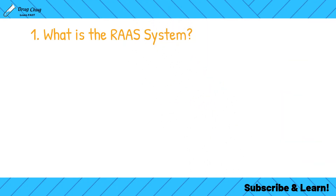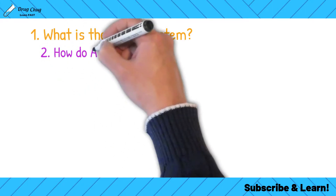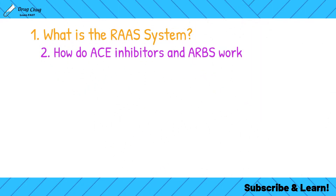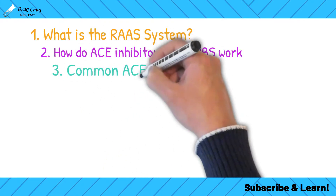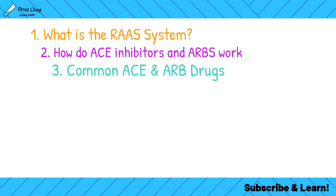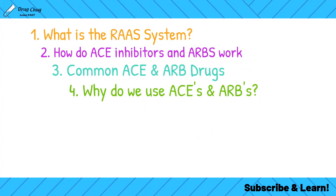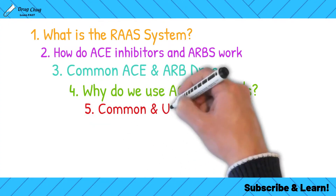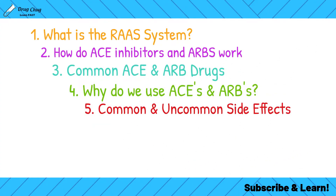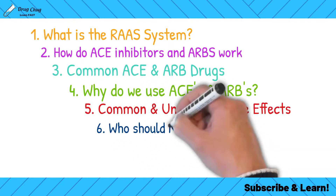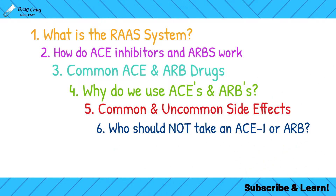Here's how we're going to break down this video: first we'll talk about what the RAS system is, then we'll see how ACE inhibitors and ARBs work, then we'll cover the common ACE and ARB drugs and their dosages, then why we use an ACE or ARB on patients, then common and uncommon side effects, and finally who should not take an ACE or ARB.